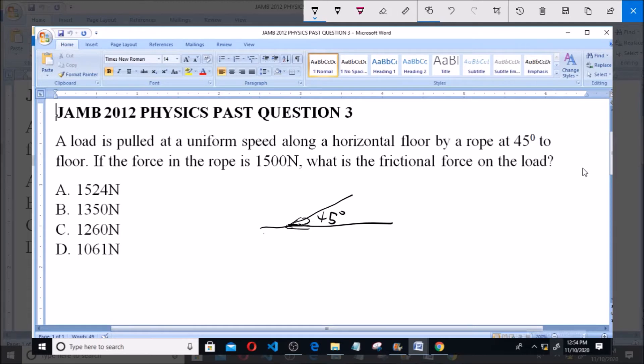and then the rope is inclined at 45 degrees and being used to pull this load. Now we're asked if the force in the rope is 1500 Newton, what is the frictional force on the load?